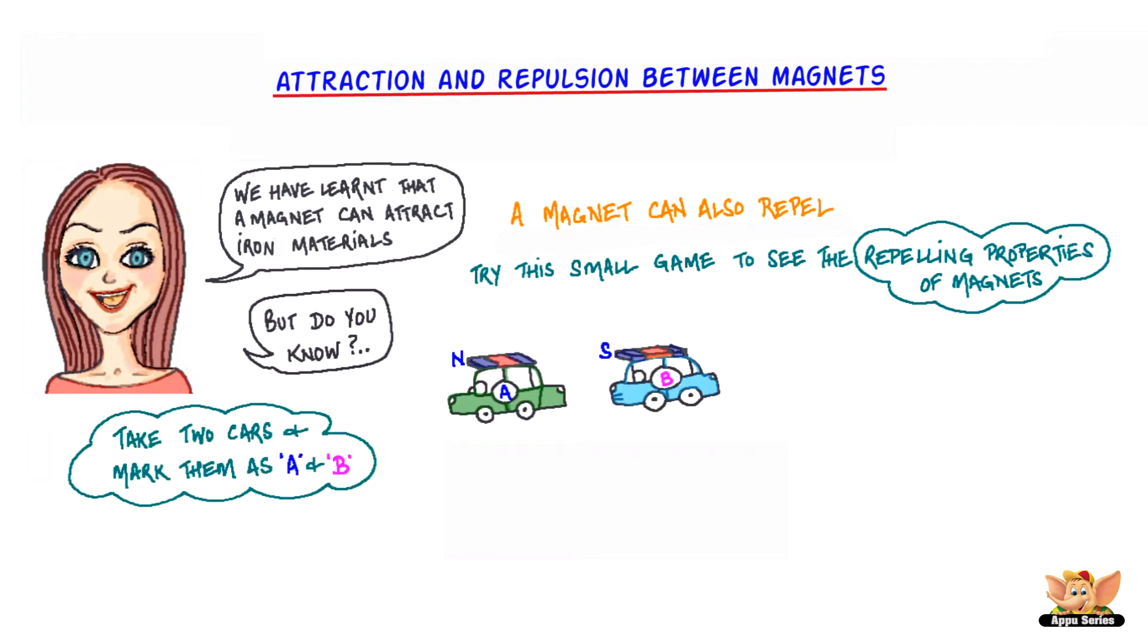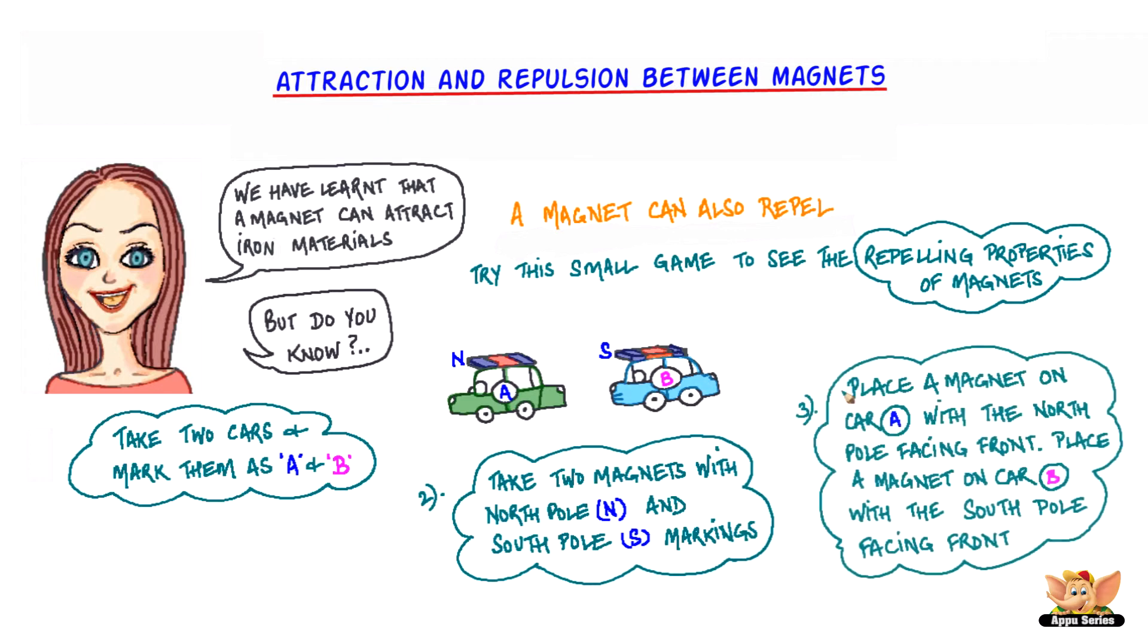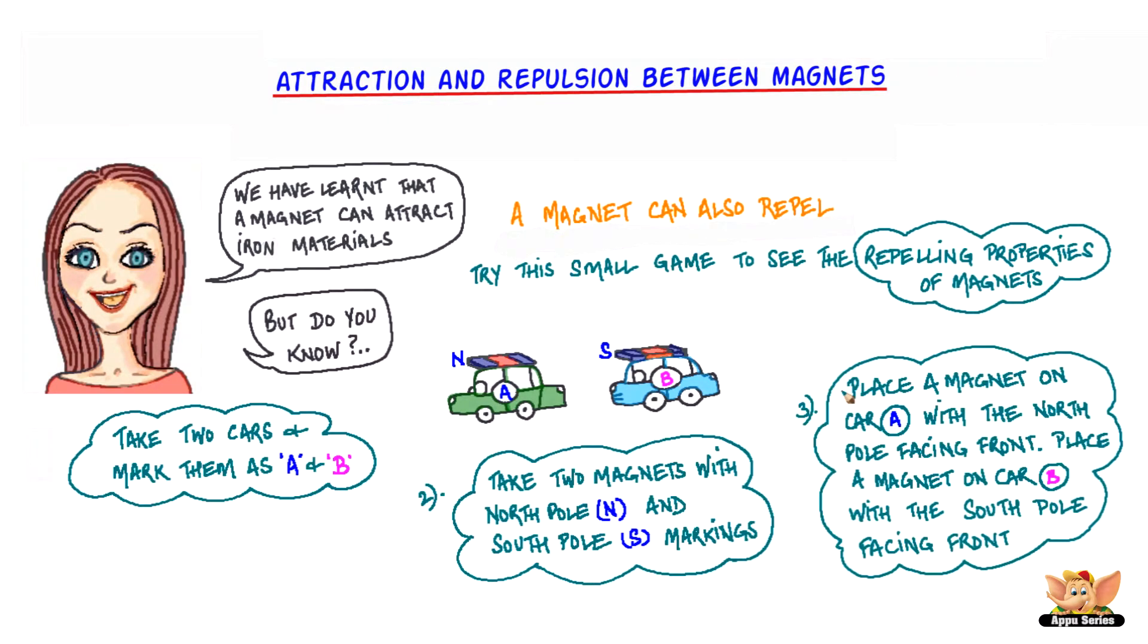Take two cars and mark them as A and B. Take two magnets with North Pole N and South Pole S markings. Place a magnet on car A with the North Pole facing front. Place a magnet on car B with the South Pole facing front.